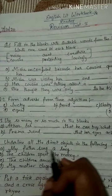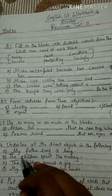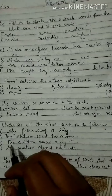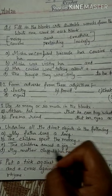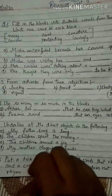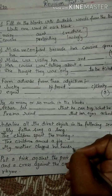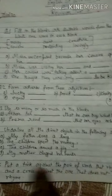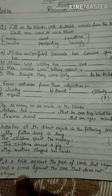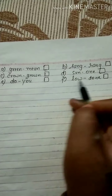Question 4 again: Underline all the direct objects — My father sang a song; The children spent the money; The children danced a jig; My mother clapped her hands. Question 5 again: Tick rhyming pairs and cross non-rhyming ones — green/mean, sang/rang, groan/crone, son/one, do/you, lo/done.